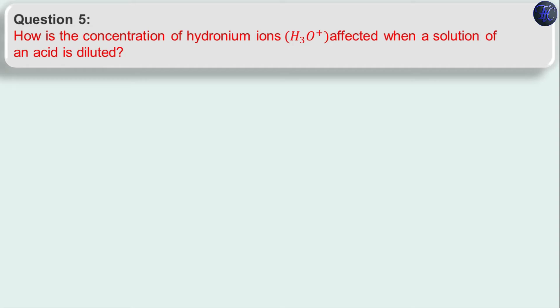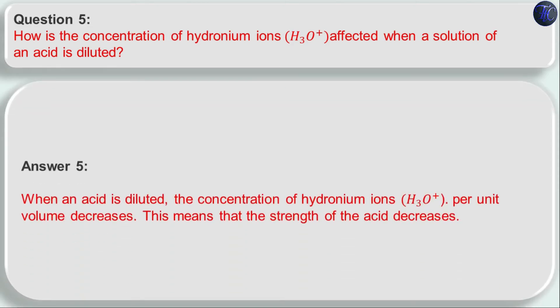Question five: how is the concentration of hydronium ions affected when a solution of an acid is diluted? As discussed in activity 2.9, when we dilute an acid the concentration of hydronium ions (H₃O⁺) per unit volume decreases, which results in a decrease in the strength of the acid. So when an acid is diluted, the concentration of H₃O⁺ per unit volume decreases, meaning the strength of the acid decreases.